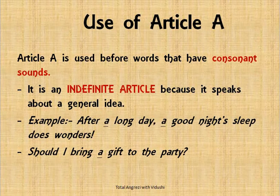'After a long day, a good night's sleep does wonders.' 'Should I bring a gift to the party?' — You're talking about something very general, not a specific item, so a gift is a general thing. That is why you use A. It is an indefinite article, which means you cannot define exactly what the idea is — you're talking about something general. Remember: A is used before nouns with a consonant sound and is indefinite because it refers to something general.